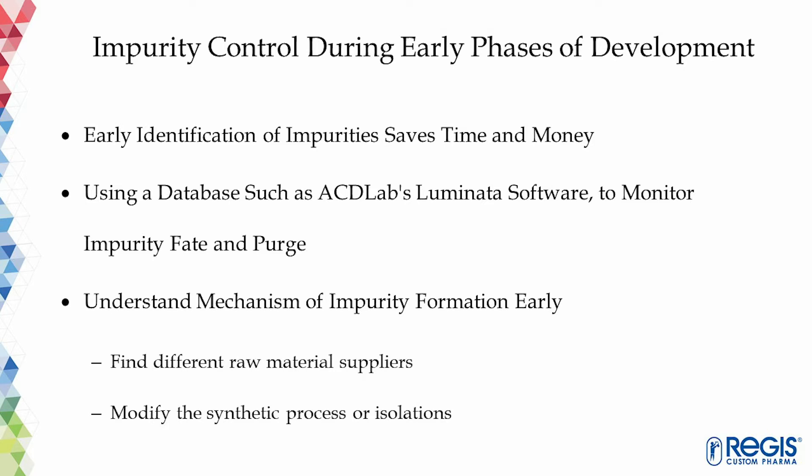With the intention of early controlling impurities, we can use a database such as ACD Labs' Luminata software to monitor impurity fate and purge. All analytical data can be summarized together in a single place, and the impurity history throughout drug development can be tracked and evaluated. We will understand the mechanism of impurity formation early by knowing the structure of impurities. If the impurity is related to raw materials, we can find a different raw material supplier with a different impurity profile. In this way, it is much cheaper than removing impurities by some specific procedures.